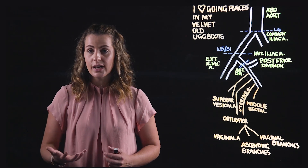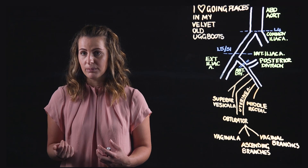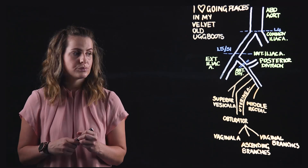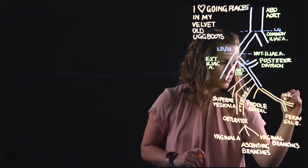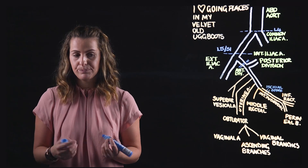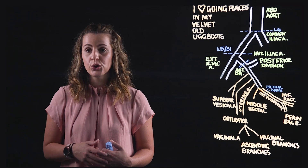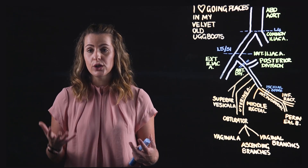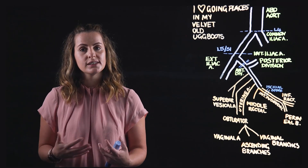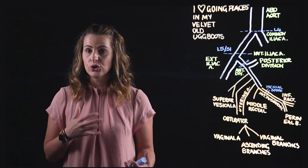The internal pudendal artery curves around the ischial spine to enter the perineum via the lesser sciatic foramen, where it gives branches to the perineal and inferior rectal arteries. The perineal branches supply the perineum, the urogenital and anal triangles, and the female external genitalia such as the vulva and vestibular bulb. The inferior rectal artery supplies the inferior rectum, the anal canal, and the internal and external anal sphincters.